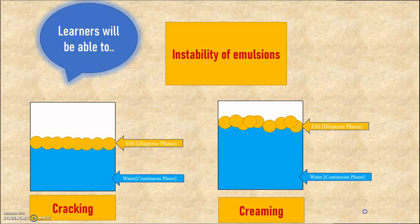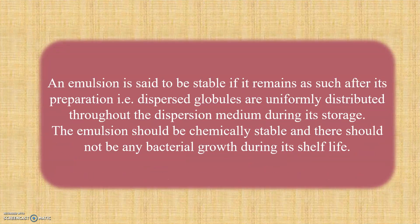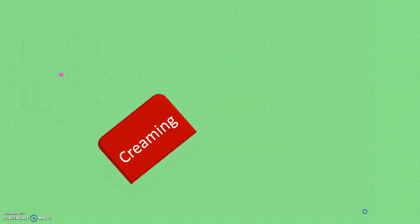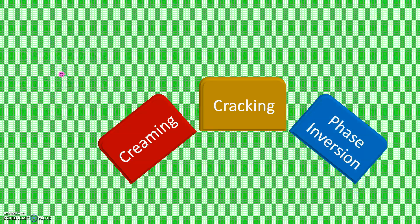Let us start with our presentation. An emulsion is said to be stable if it remains as such after its preparation, i.e. dispersed globules are uniformly distributed throughout the dispersion medium during its storage. The emulsion should be chemically stable and there should not be any bacterial growth during its shelf life. Now let us see the instability of emulsions, which are creaming, cracking and phase inversion.